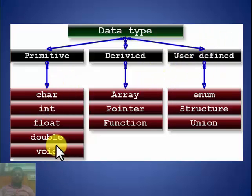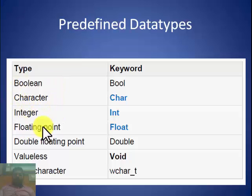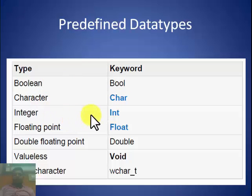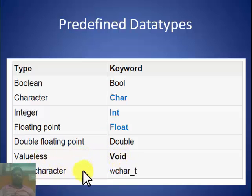Currently we will discuss the predefined data types. These include Boolean (keyword: bool), character (keyword: char), integer (keyword: int), floating point (keyword: float), double floating point (keyword: double), valueless (void), and wide character (wchar_t). Double is also a floating point number but with a higher range. We will discuss some of these predefined data types in detail.